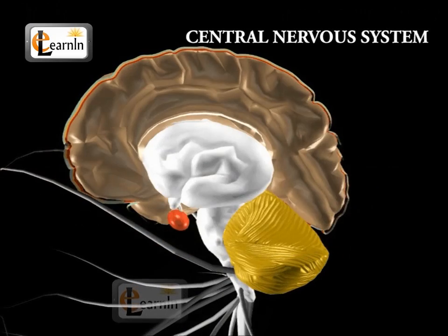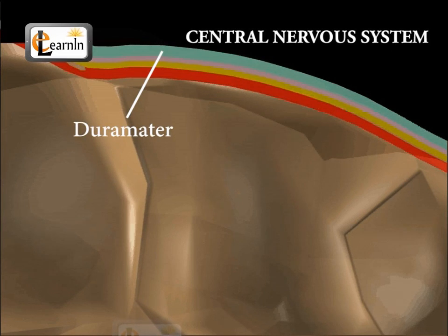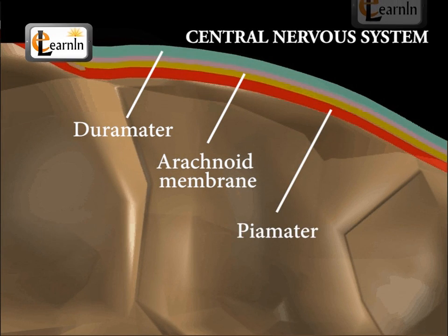Both the brain and the spinal cord are covered by three membranes. The outer membrane is called dura mater, the middle one is called arachnoid, and the inner membrane is called pia mater.